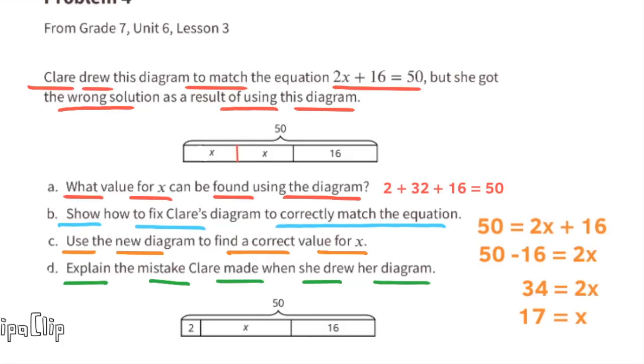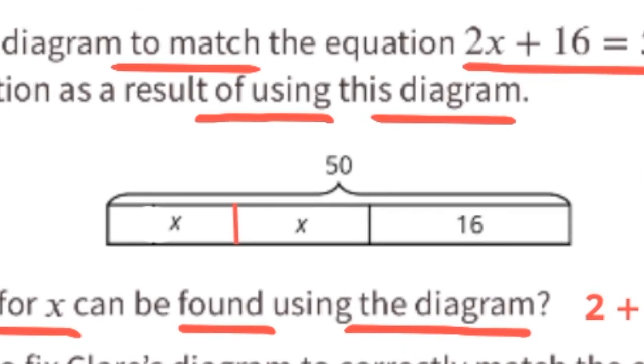Part d: Explain the mistake Clare made when she drew her diagram. The mistake that Clare made was she showed 2 + x instead of 2 times x. This diagram represents 2 times x + 16 = 50.